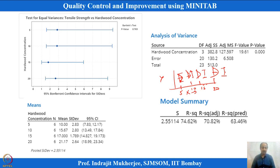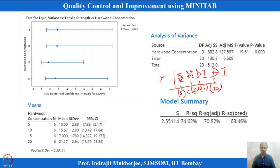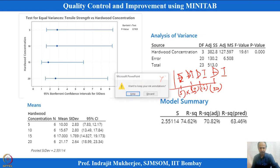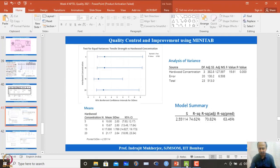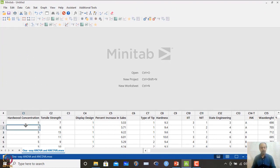We also need to check whether values within each group follow a normal distribution. If normality holds, we can proceed with the standard test; if not, we use the Welch test. First, we perform an overall normality test on tensile strength using the Anderson-Darling test in MINITAB, then proceed to test equal variance.